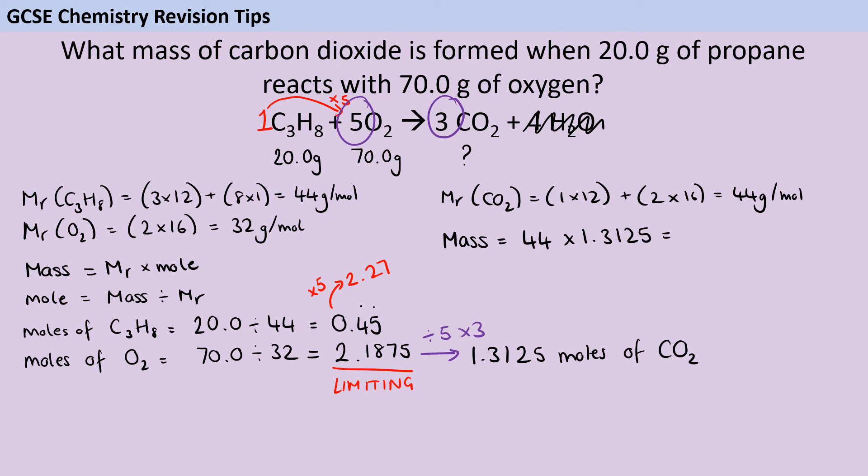Now I go back to my mass equals Mr times mole calculation, and I can see that my mass of carbon dioxide will be 44, because the mass of carbon dioxide is 44, multiplied by 1.3125, which gives me a final mass of 57.75 grams. And that will be my final answer for this question.